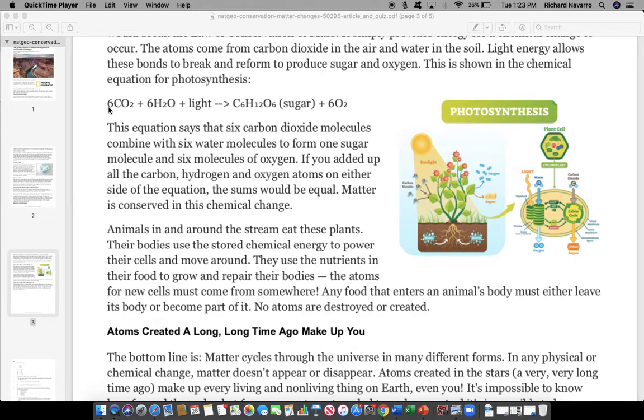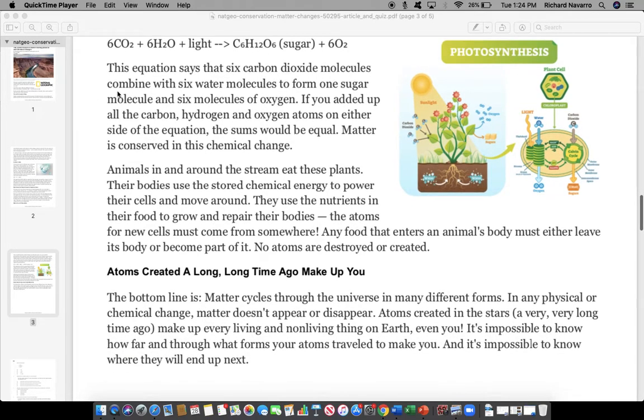6CO2 plus 6H2O plus light energy turns into C6H12O6, or glucose sugar, and 6O2. This equation says that 6 carbon dioxide molecules combine with 6 water molecules to form 1 sugar molecule and 6 molecules of oxygen.